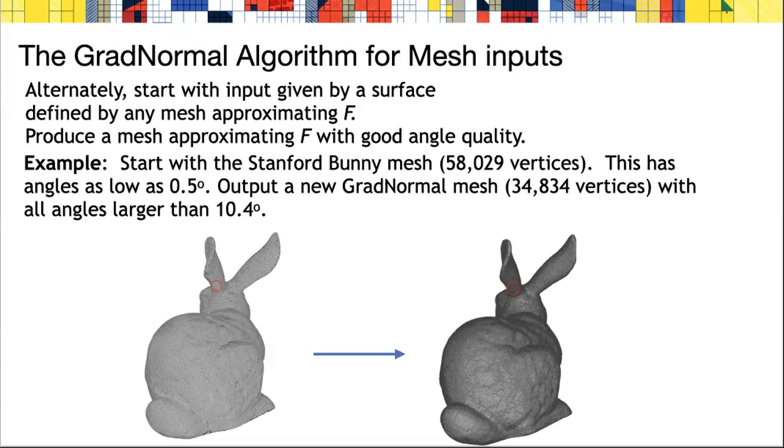Here we have an example where we start with the Stanford bunny, which is itself a mesh produced by the Stanford Graphics Laboratory. This has quite good mesh properties, but some of the triangles in the Stanford bunny have angles as low as 0.5 degrees. When we run it through the GradNormal algorithm, the new triangles will all have angles larger than 10.4 degrees.